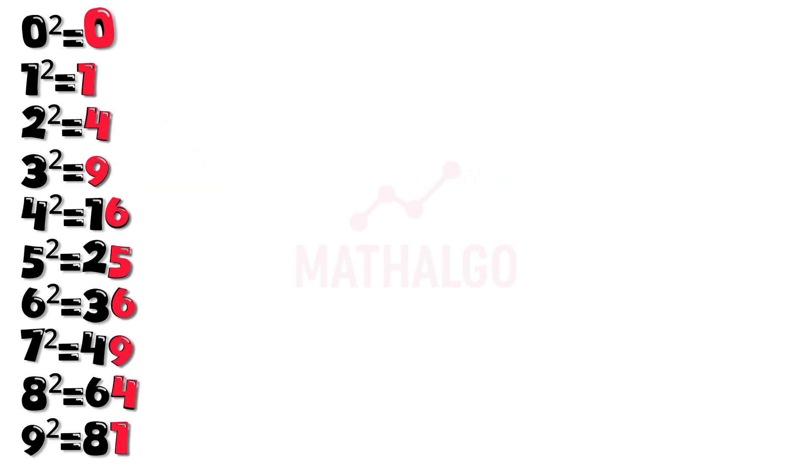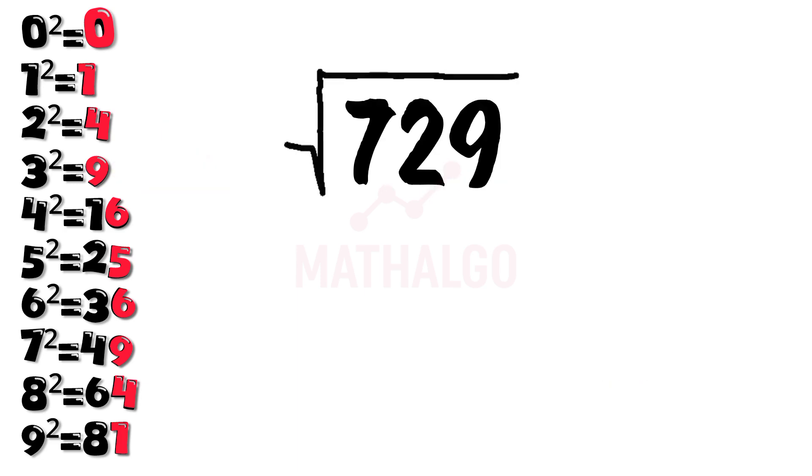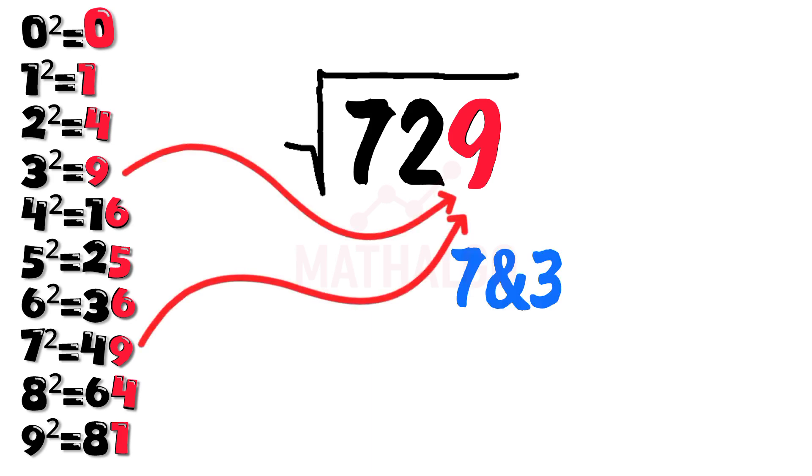Surprised? Let's try a harder one. How about the square root of 729. Look at the last digit. It's 9. Now 3 squared equals 9 and 7 squared equals 49.